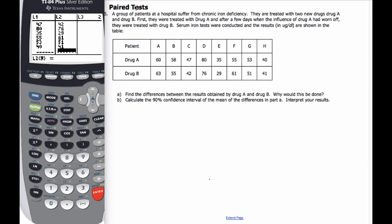Okay, so for this example, we're going to do what's called a paired test. And so if you consider the scenario, we have a group of patients suffering from chronic iron deficiency. They're treated with two new drugs, drug A and B.